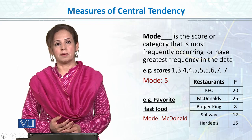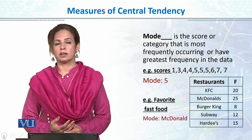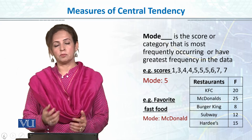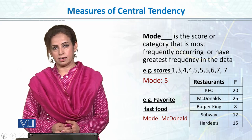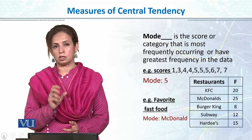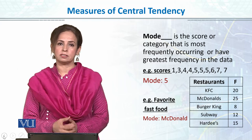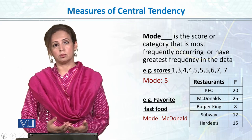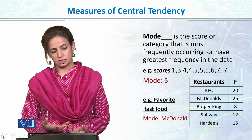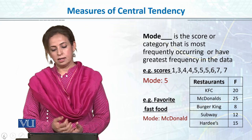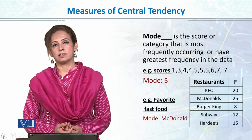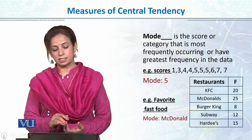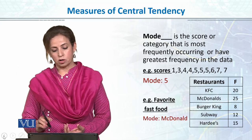Mode basically hum use karte hain jab humare paas nominal data ho, ya ordinal data ho, categorical data ho — tab hum mode use karte hain. Mode basically the most frequently occurring value hoti hai data ke andar, and it also gives us information about the central value or center of the data. For ungrouped data, the most frequently occurring value will be the mode. Jaise is example ke andar: one, three, four, four, five, five, five, six, seven, seven — the value occurring most is five, it is occurring three times, so in this data the mode will be five.